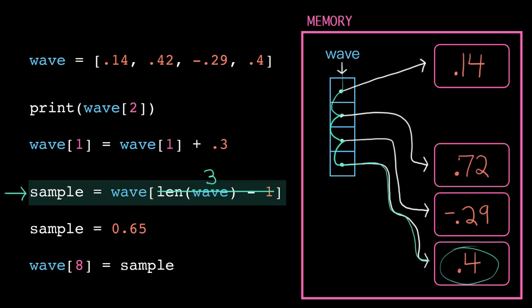But instead of duplicating that value and copying it to a second location in memory, the computer optimizes and it just has the variable sample point to the same location.